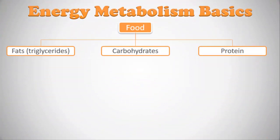Energy metabolism basics — what does it all mean? We're going to try to make this simple. We eat food, and the food we eat is made up of different quantities of fats (also called triglycerides), carbohydrates, and proteins. When these foods are swallowed and make their way to your stomach, they're broken down into their individual constituents. The individual constituents of fats are triglycerides, which are made of a combination of free fatty acids and glycerol.